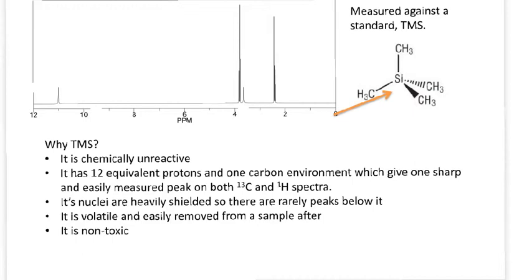Secondly, it's got 12 equivalent protons and one carbon environment. If you look at this molecule, there are 12 hydrogens but they're all equivalent. All it means is that you'll only get one peak, so on both proton NMR and carbon-13 NMR you'll only get one peak and it'll be very sharp and very strong. The third reason is that the nuclei in TMS are heavily shielded, so there are rarely any peaks to the right-hand side of it. Unless you're doing some transition metal chemistry, all the peaks that you'll see in your molecule will be to the left of TMS, and that makes it nice and easy to see your spectra.